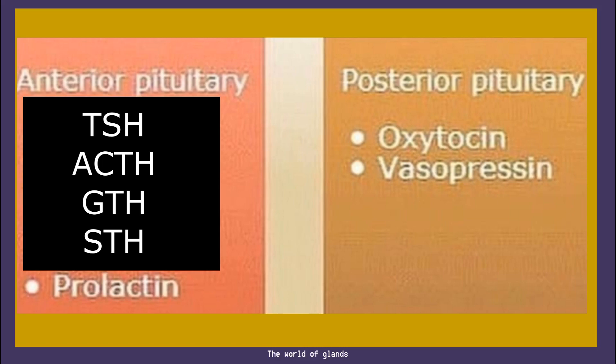Those stored hormones are oxytocin and vasopressin. So to summarize: anterior pituitary produces tropic hormones such as TSH, ACTH, GTH, GH, and prolactin; whereas posterior pituitary acts as a storehouse of oxytocin and vasopressin.